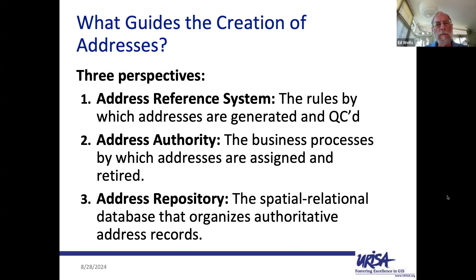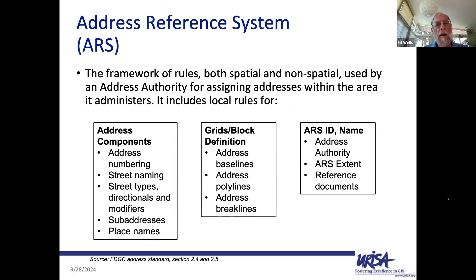The address reference system is a model of rules by which we can express a location. It's different from the coordinate reference system, linear reference systems, and computer networks. It has a particular framework of rules that relate a point or feature to either a thoroughfare, a well-known landmark name, or a point of postal delivery — all defined in the postal world. They all come to us as addresses and must be dealt with in the same database.